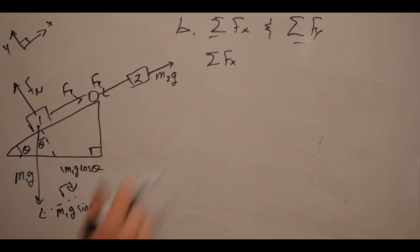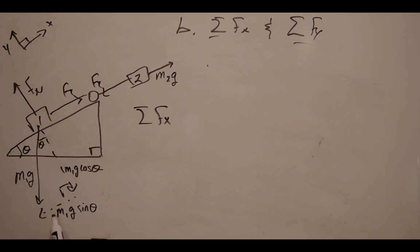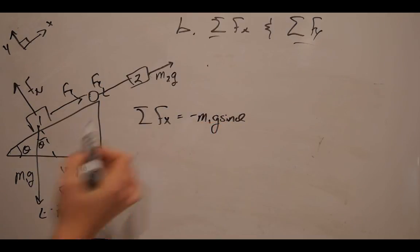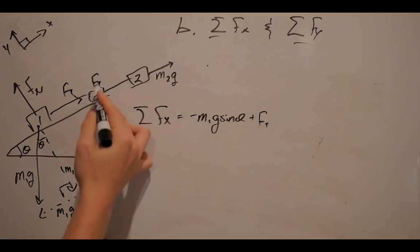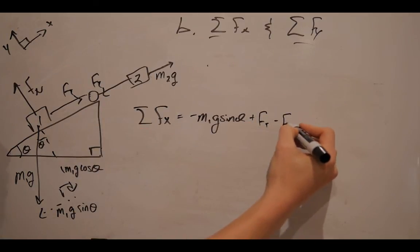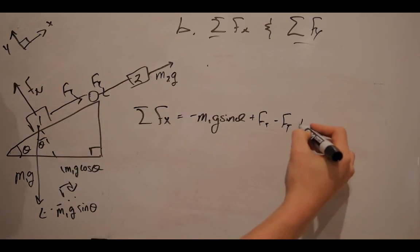So in order to write our net force equation, let me write that down here, we have to take a look at all of the forces along the x direction. So, let's start from down here. We have this force M1g sin theta going to the left. We have force of tension going to the right, making that positive. Negative force of tension going to the left, making that negative. And we have M2g going to the right, making it positive.